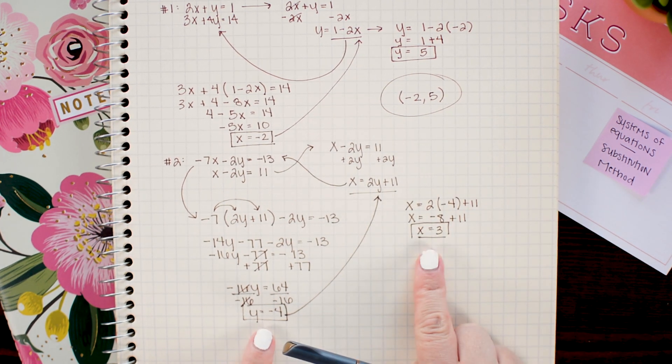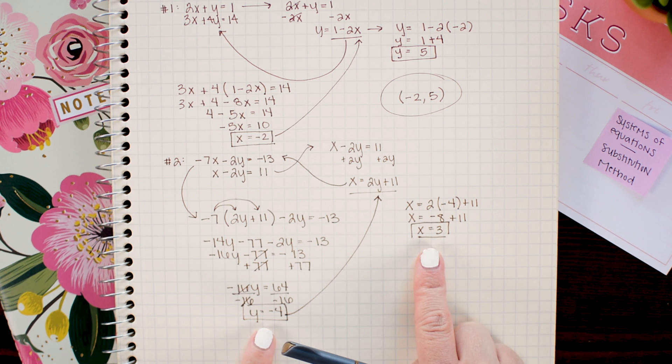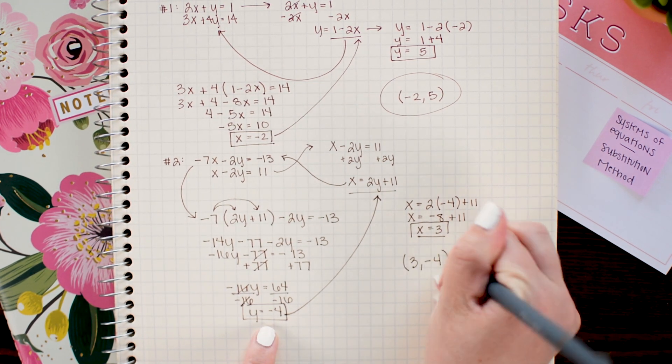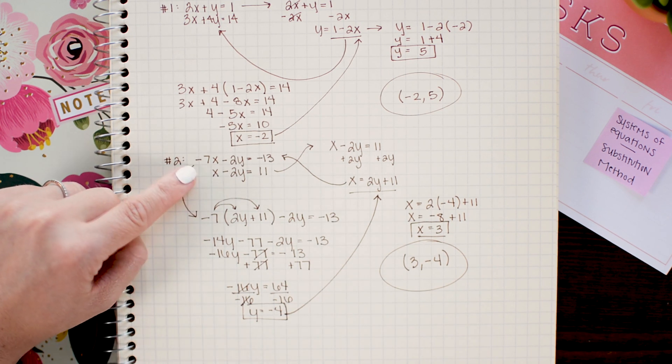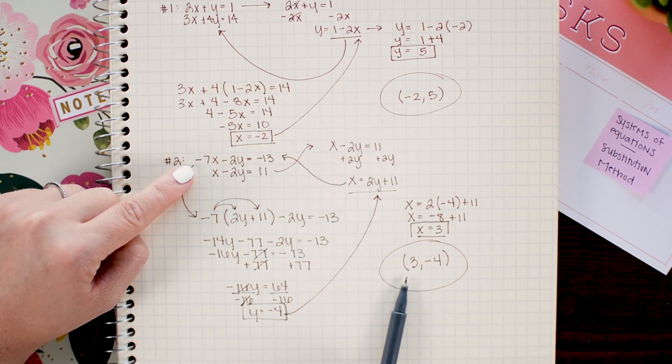Okay now I have my xy coordinate pair and of course the last step is to write that as an xy coordinate. So the place where these two lines intersect is at the coordinate point 3 negative 4.